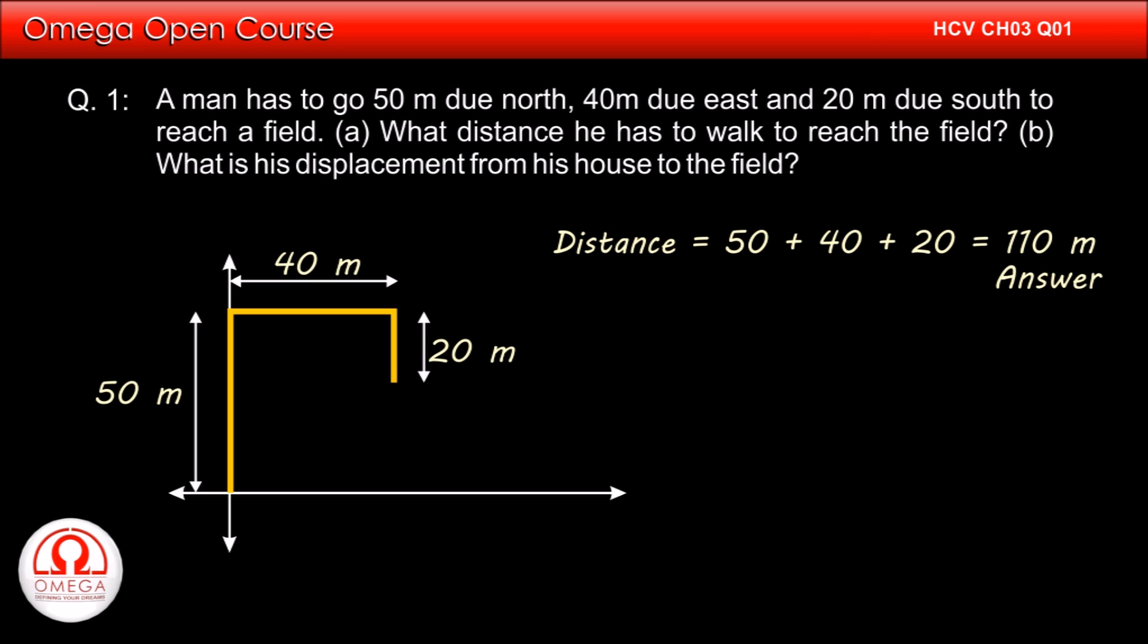Since the man moves 50m north and then 20m south, his net displacement towards north is 30m. Displacement towards east is 40m. Therefore the magnitude of displacement is root under 30 square plus 40 square or 50m.